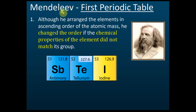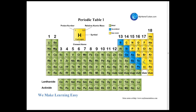According to Mendeleev's ascending order rule, iodine at 126.9 should come before tellurium at 127.6. However, he found that if iodine is placed before tellurium, the chemical properties of iodine do not match the other elements in that group. So he swapped their positions — placing tellurium before iodine — because tellurium's chemical properties matched its group and iodine's properties matched its group.